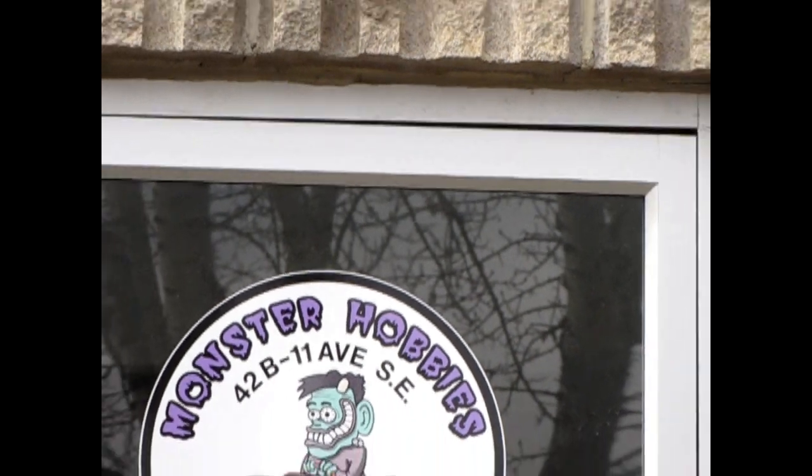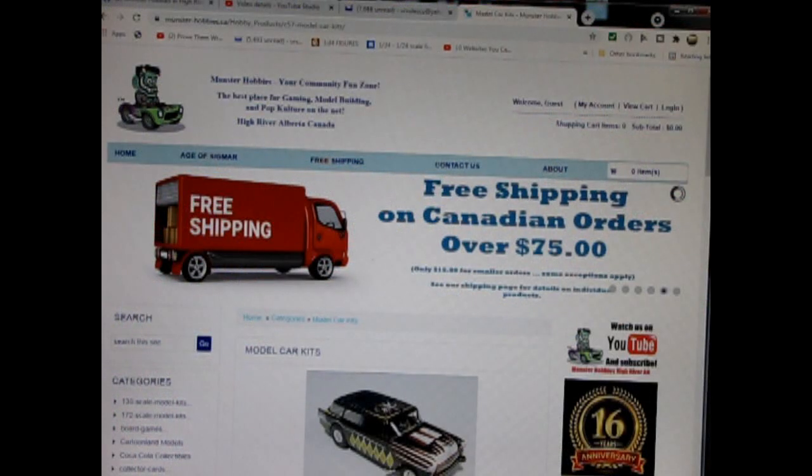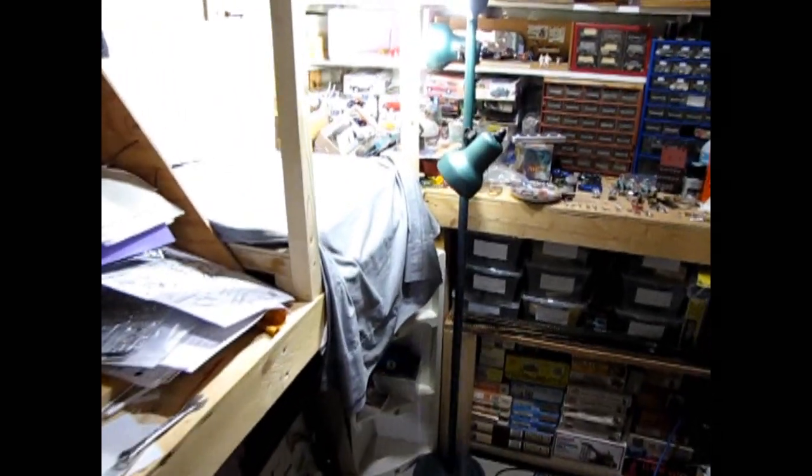Hello everybody, my name is Trevor Selescu and I'm the owner of Monster Hobbies in High River, Alberta, Canada. Today we will be looking at Mark Donahue's 1971 award-winning AMC Javelin AMX by AMT. Now this one's out of my own personal collection, however you can see all of our available model kits at www.monster-hobbies.ca. I will leave a link in the description below. Now let's go down to our bench and see what's in the box.